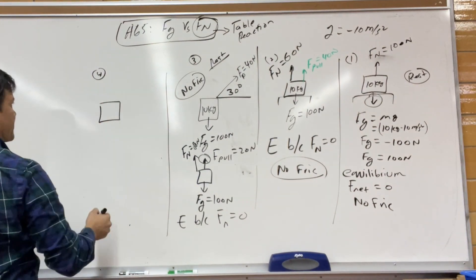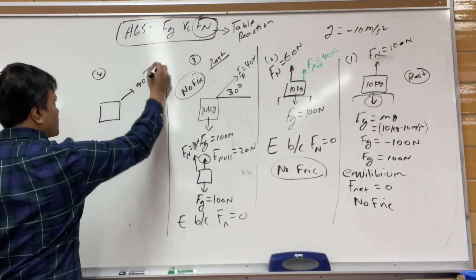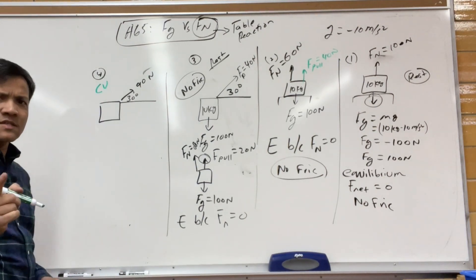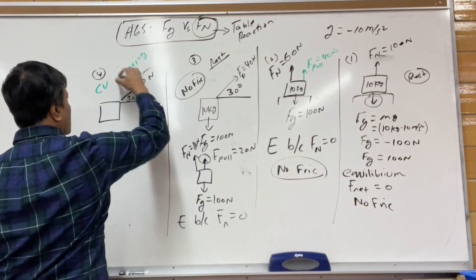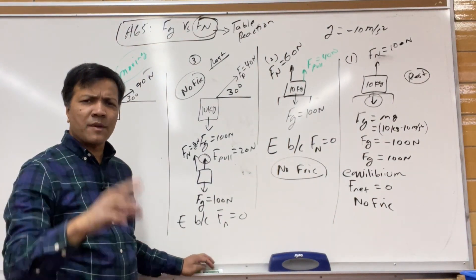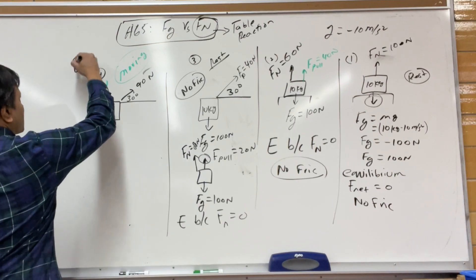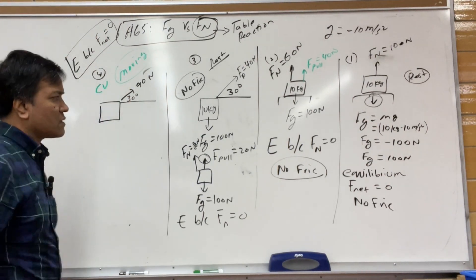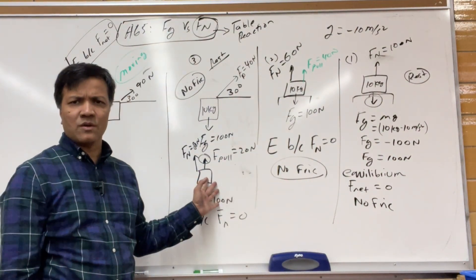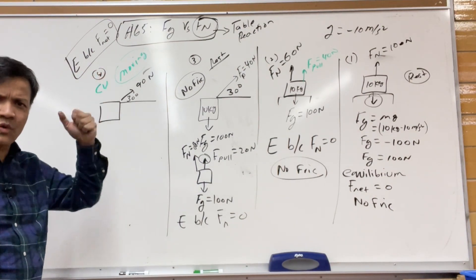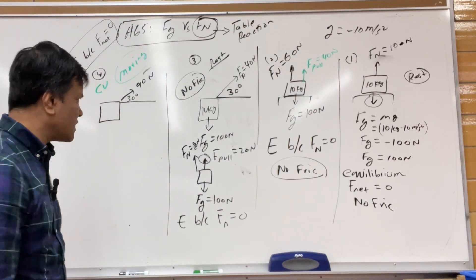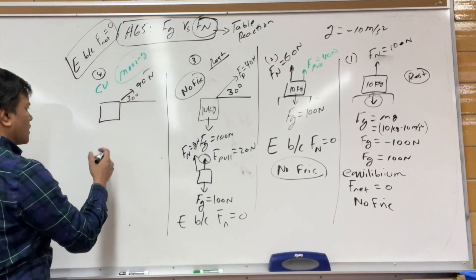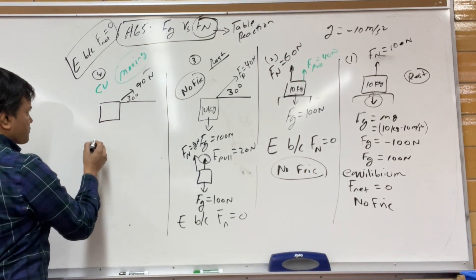Problem four is interesting because no mass is given. You're pulling with 90 newtons at a 30-degree angle, and the object is moving at constant velocity. Does that mean it's still in equilibrium? Yes, because the condition for equilibrium is that net force equals zero. An object moving at constant velocity is still in equilibrium — net force is zero whether at rest or moving at constant speed.